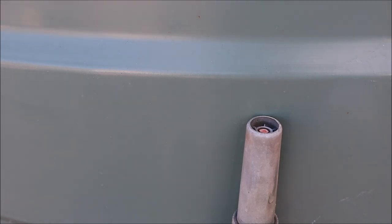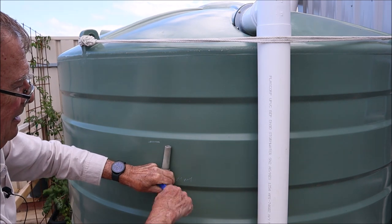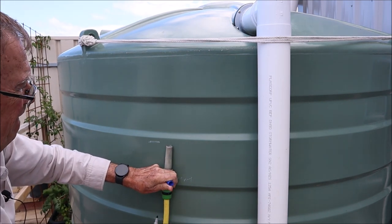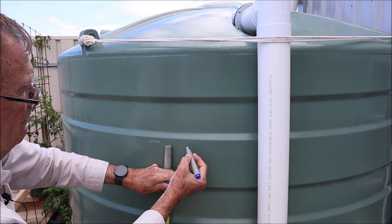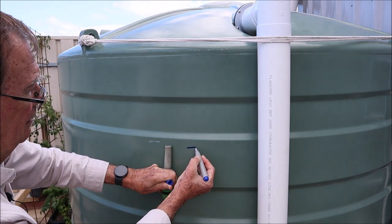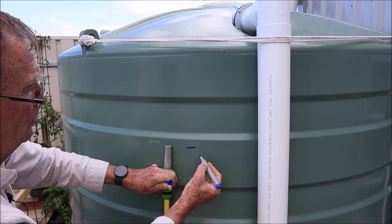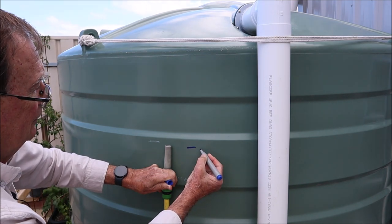Once we've established the height, what I normally do is mark the level with a whiteboard marker which I can rub off. It's just a temporary mark, and then I'll put the date like that.